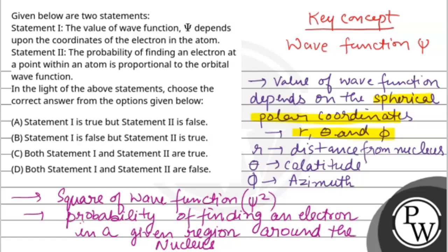The second statement says the probability of finding an electron at a point within an atom is proportional to the orbital wave function — this is wrong, because the probability is proportional to the square of the wave function, psi squared, and not to the orbital wave function itself. So the second statement is wrong. The first statement is true but the second is false, so the final answer is A.